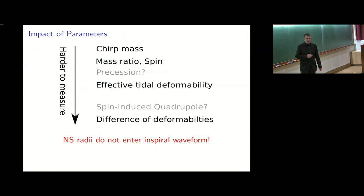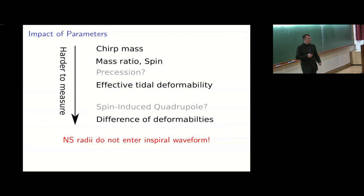Here is a quick diagram of what's harder to measure. The most impactful parameter is the chirp mass, measured best. Mass ratio and spin come next and are somewhat degenerate. Then we might have precession effects, but in the detected event there was no indication and waveform models are still being developed to account for precession fully. The effective tidal deformability is a much smaller effect but affects the waveform differently, so you can still disentangle it — though with residual degeneracy with mass ratio. Quantities essentially not measurable currently include the spin-induced quadrupole and differences in individual deformabilities.